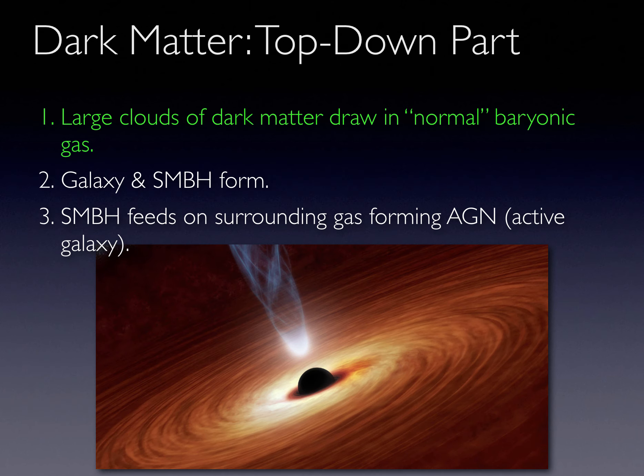Computer models suggest that the very centers of these gas clouds may have collapsed to form supermassive black holes in single events, as opposed to the accumulation of smaller stellar mass black holes. Each black hole then begins feeding on the surrounding gas, creating a quasar and all the characteristics of an active galaxy.